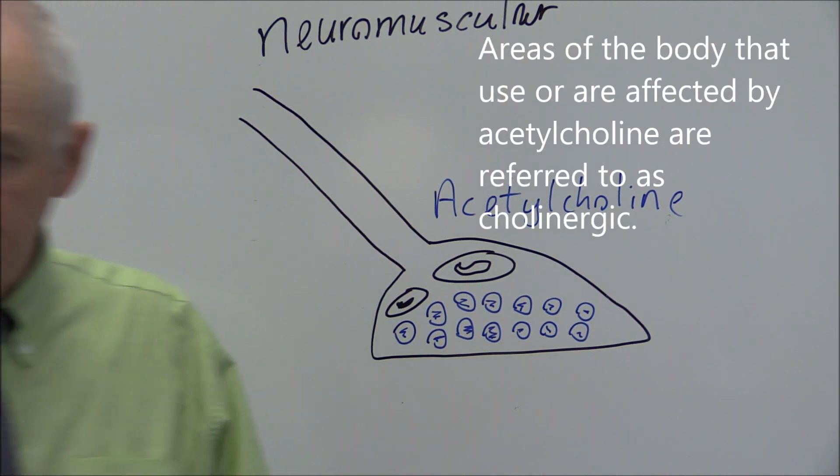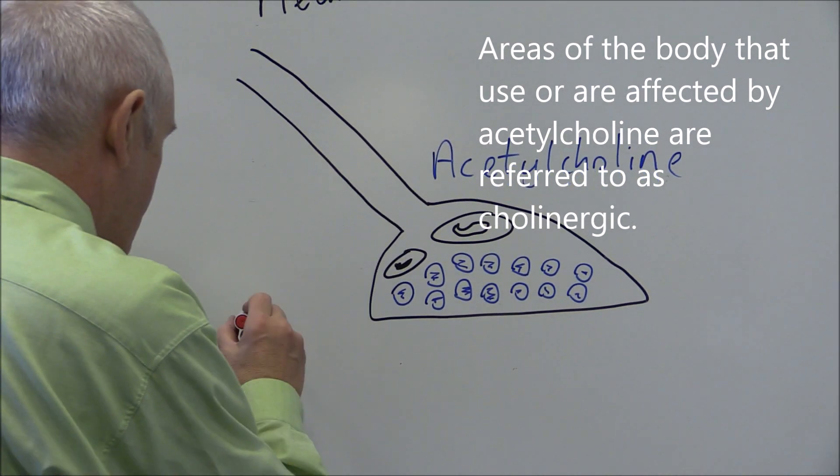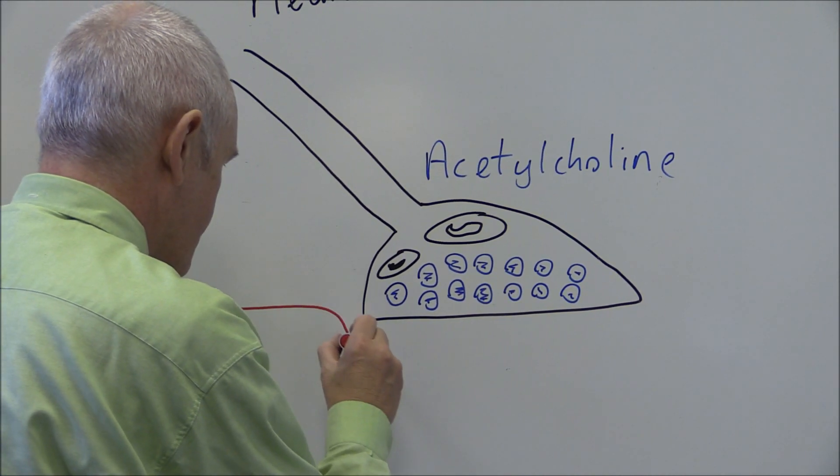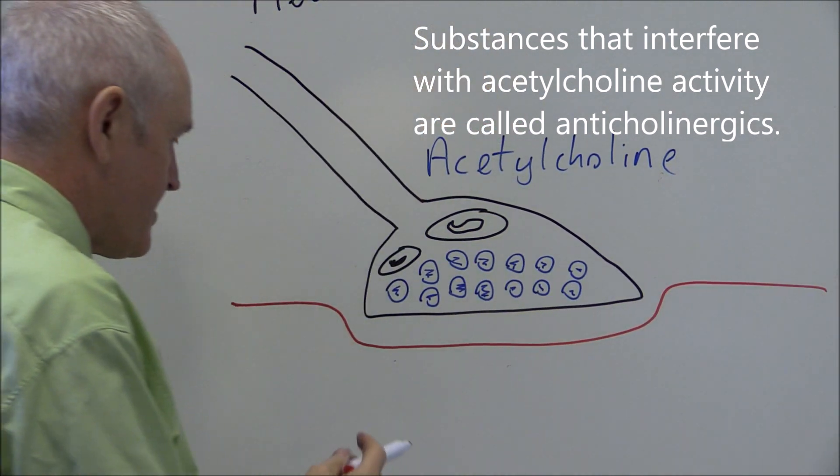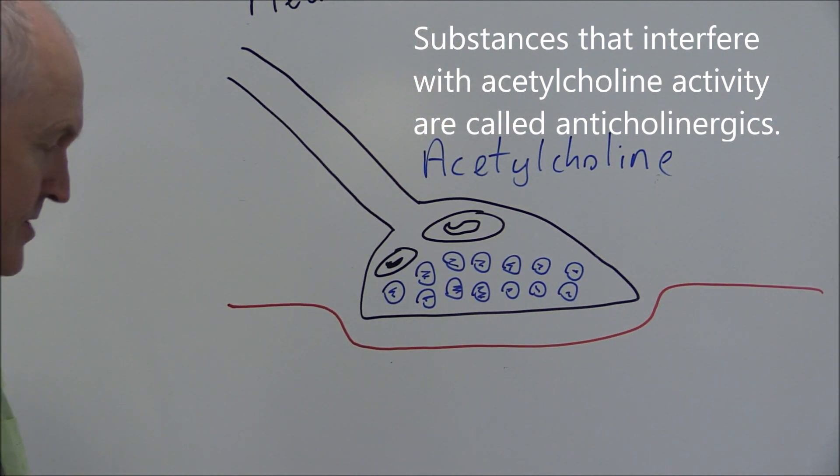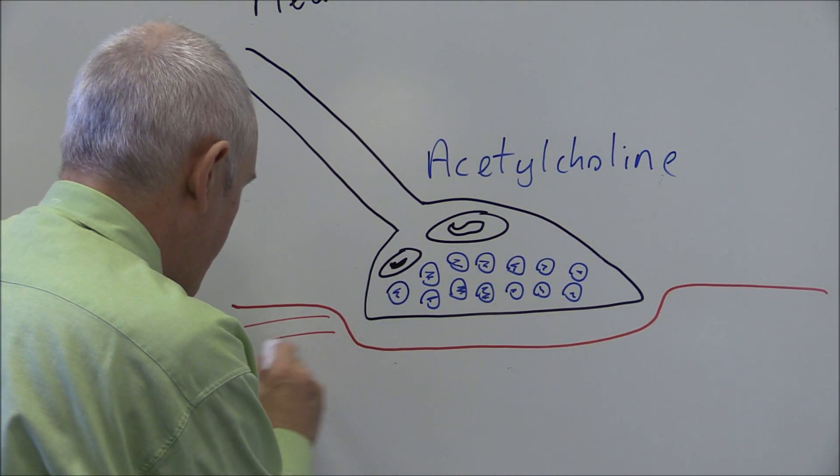Now underneath this we have a muscle. So here we have the muscle because the aim is that this motor neuron is going to stimulate contraction of the muscle.